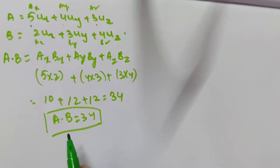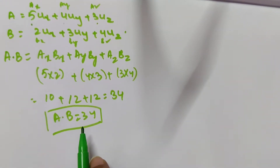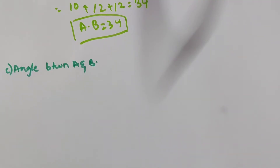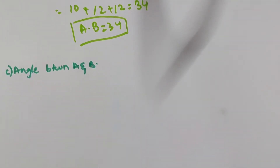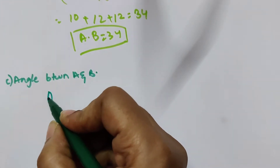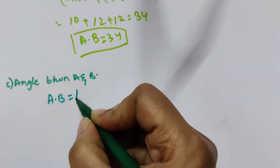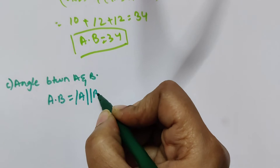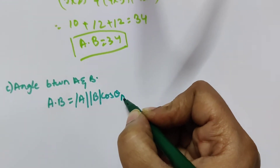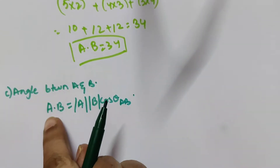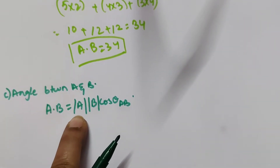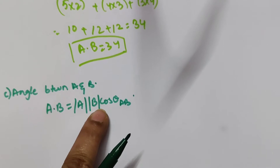Next, the third part is the angle between A and B. The formula is: A dot B = |A| × |B| × cos(θ_AB). We already have A dot B = 34. Now we need to find |A| and |B| to get the angle.